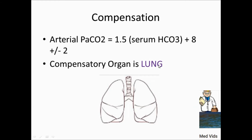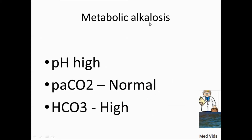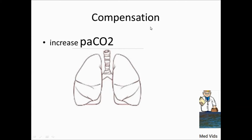Remember: the compensatory organ for metabolic disorders is the lung — both for metabolic acidosis and metabolic alkalosis. For metabolic alkalosis, the first step is to check pH; if it is high, think alkalosis. If PaCO2 is normal, skip it and move to bicarbonate. If bicarbonate is also high, think metabolic alkalosis.